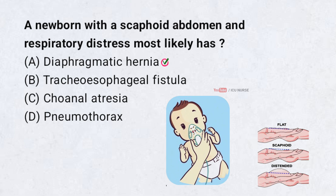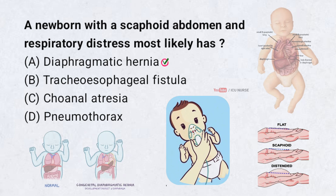Congenital diaphragmatic hernia allows abdominal contents into the chest. This compresses the lungs and causes respiratory distress. The abdomen appears scaphoid, or sunken.